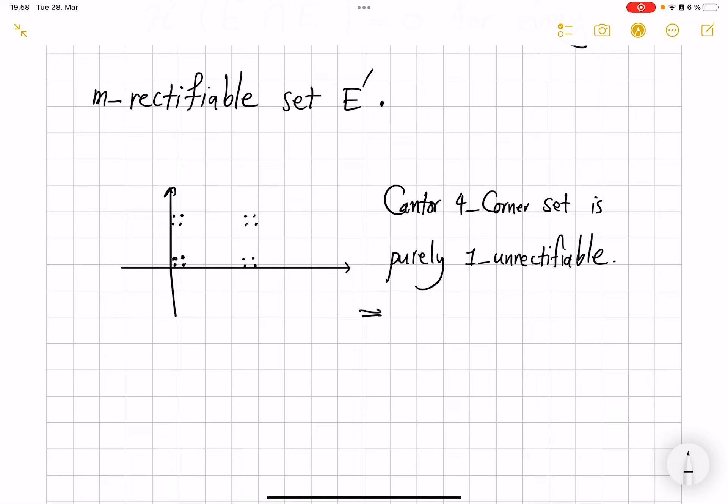As a consequence, for example, this means that this set intersected with any smooth curve will have zero H^1 measure. So for every, we can't even say Lipschitz curve because Lipschitz curves are definitely one-rectifiable sets by definition. So for every Lipschitz curve that you run, it cannot capture any subset of this four-corner Cantor set with positive measure.